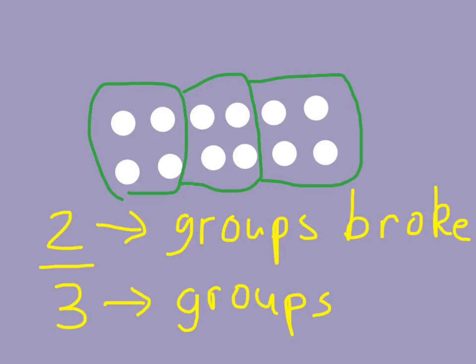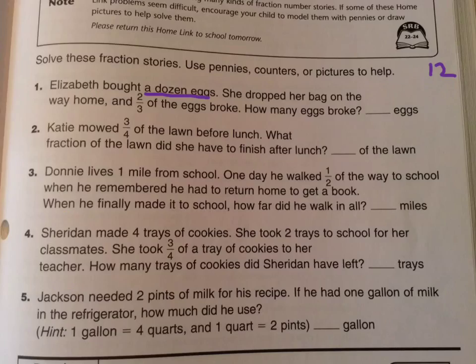Now we know that two of these groups broke — broke, broke. The question is how many eggs broke, and we can see that this many eggs broke total. That's how many eggs broke.